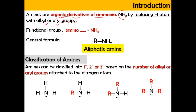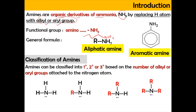Aliphatic amine is basically a straight-chain amine. And this is known as the aromatic amine — aromatic amine means that the NH2 is attached to a benzene ring or an aromatic ring.